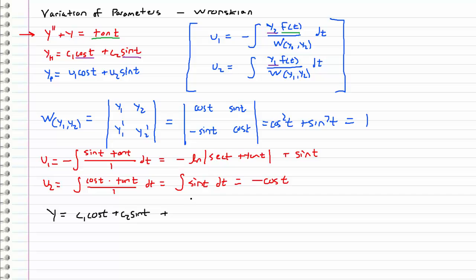So plus u1, which is this mess, all times cosine t, plus u2 times sine t, which is minus cosine t times sine t. This cancels out with that since it's being multiplied by cosine, leaving us with y equals c1 times cosine t plus c2 times sine t minus cosine t times the natural log of secant t plus tangent t.